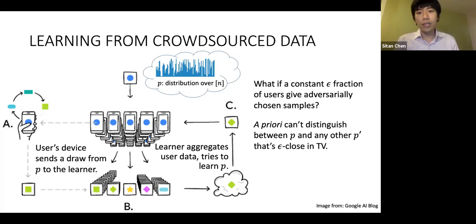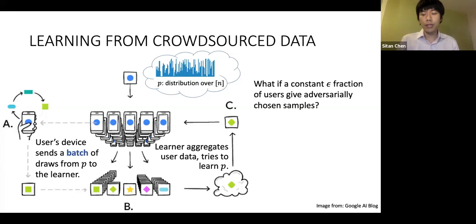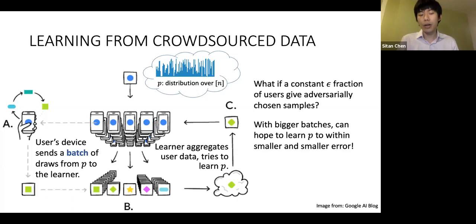But in these crowdsourced settings, you have more information, in that every user sends you not a single draw but perhaps many draws. The hope is that as the batch size gets bigger and bigger, the added redundancy will allow you to drive this error smaller and smaller.